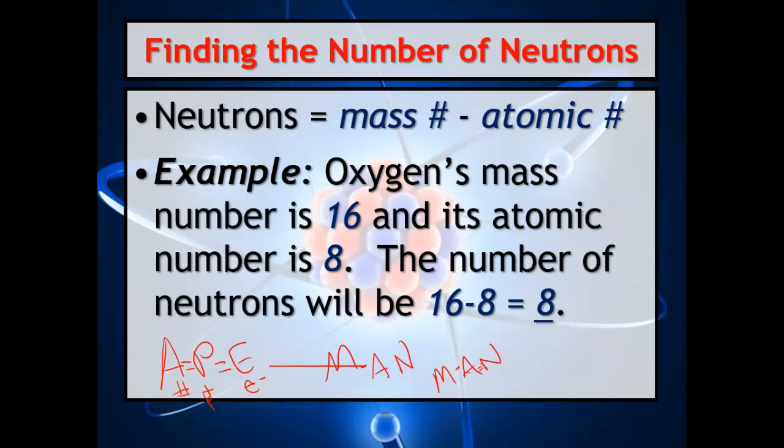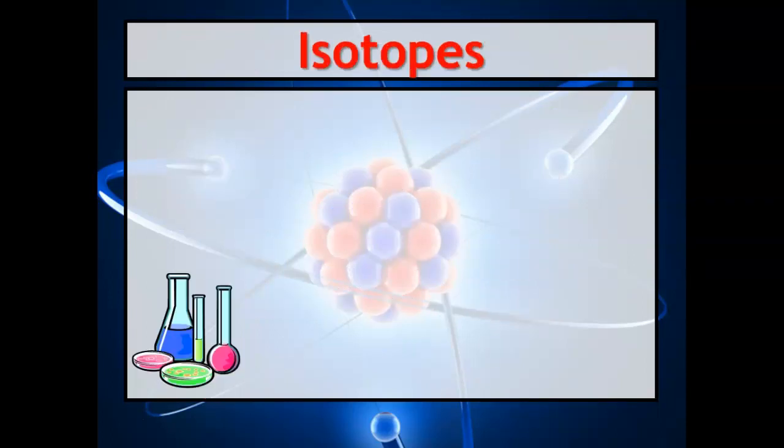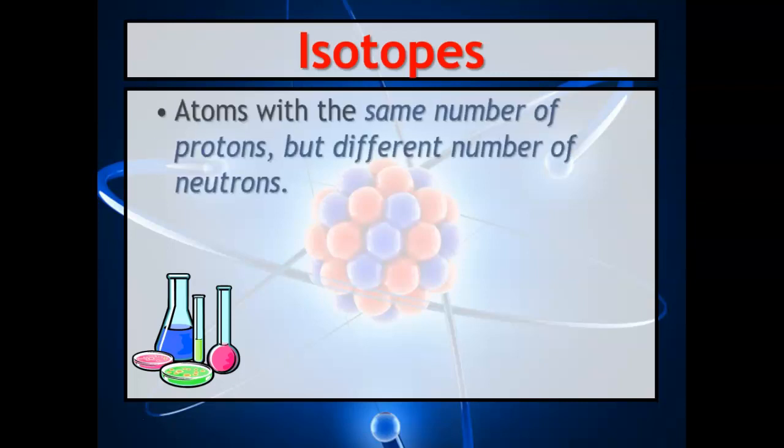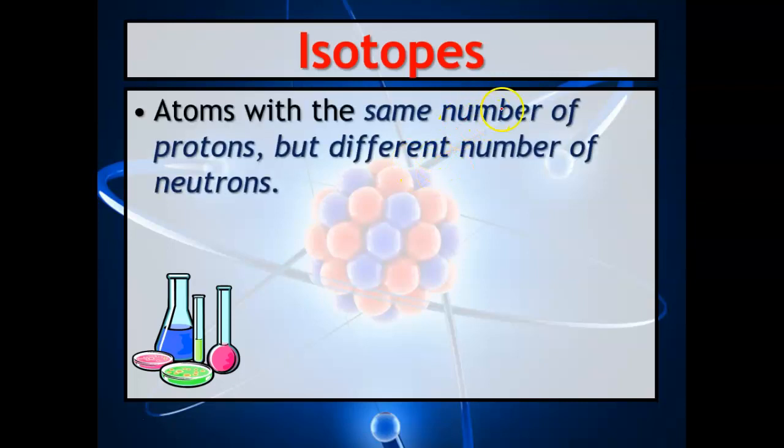Here's an example of oxygen: you have 8 protons and you have 16 as your mass number, so 16 minus 8 will give you 8. That's how many neutrons you have. So isotopes—this is a very big word. Make sure you write this down and I want you to write this definition with it: atoms with the same number of protons, so they're the same element, but they have different numbers of neutrons.